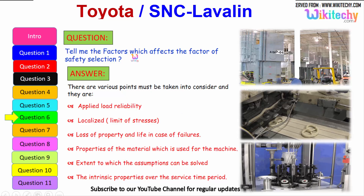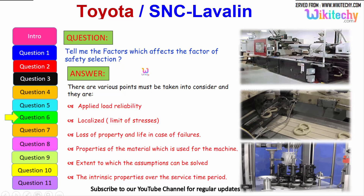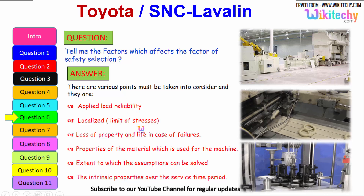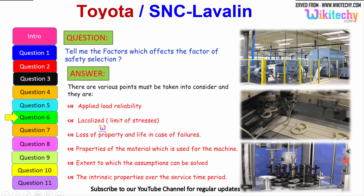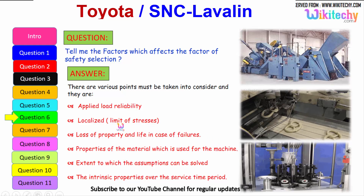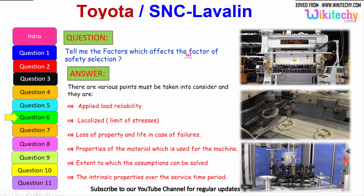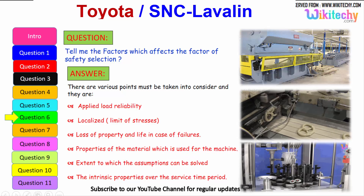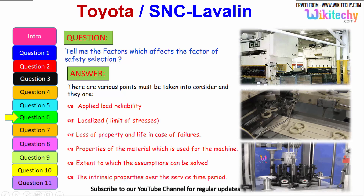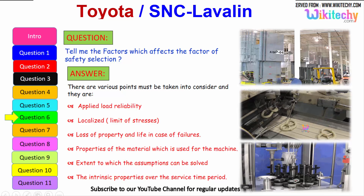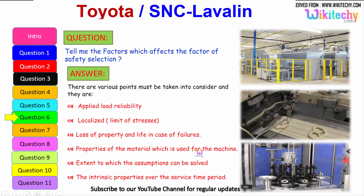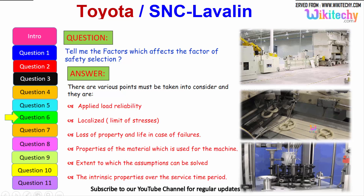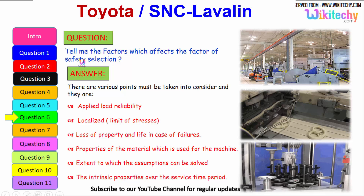Now let us see the factors which affect the factor of safety selection. These include: applied load reliability; limit of stresses localized; loss of property and life in case of failures — a very important factor; properties of the material used for the machine; the extent to which assumptions can be extended or compressed; and the intrinsic property over the service time period — how it will sustain everything we need to consider for factor of safety selection.